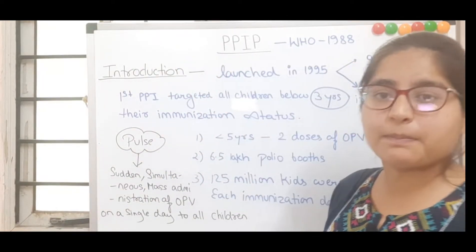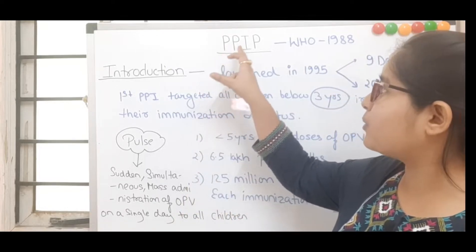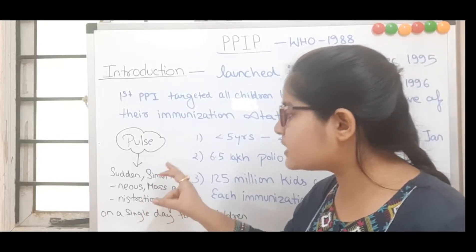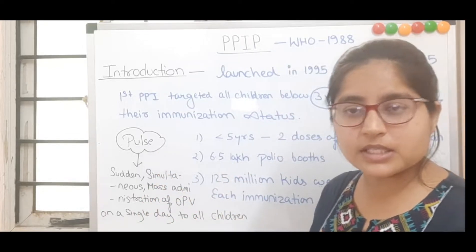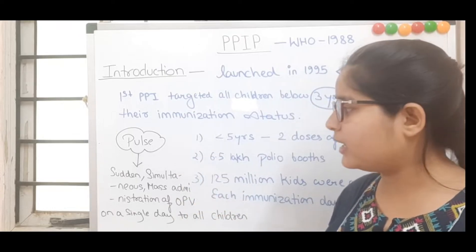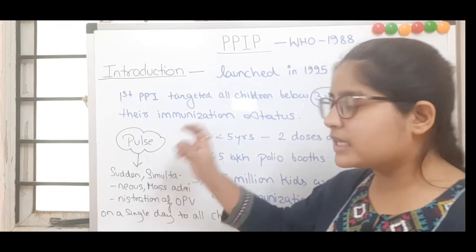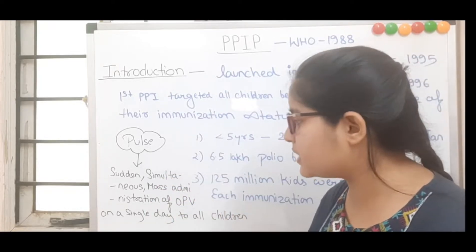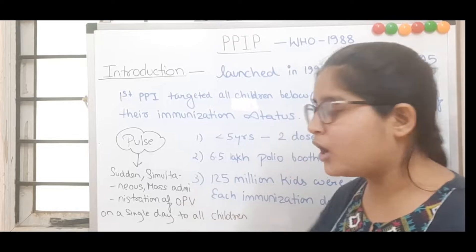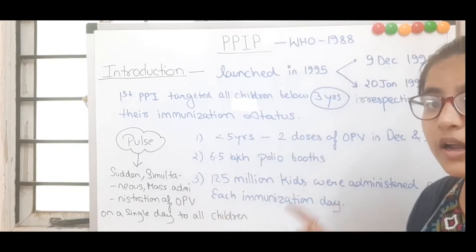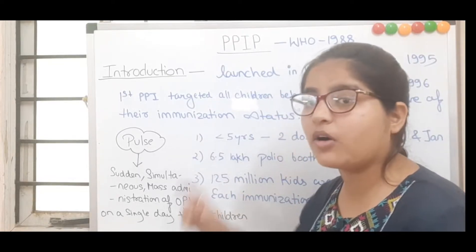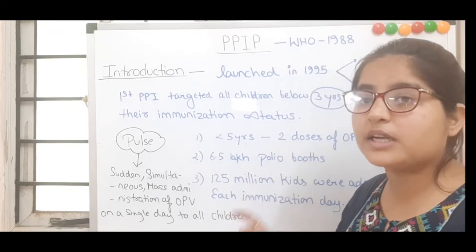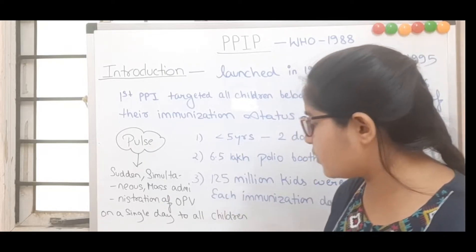First, we will understand what 'Pulse' means in Pulse Polio Immunization Program. Pulse here refers to sudden simultaneous mass administration — SSSM — of OPV on a single day to all children between 0 to 5 years old.